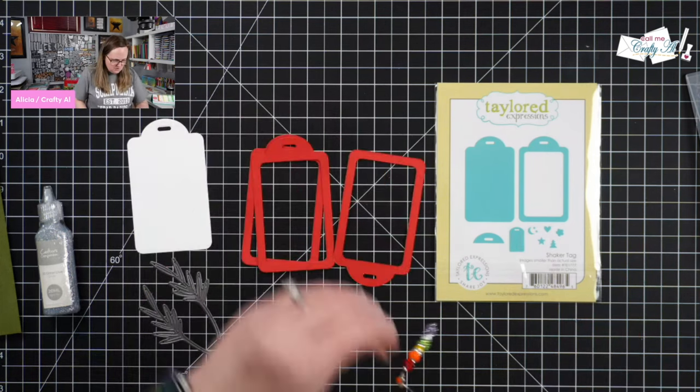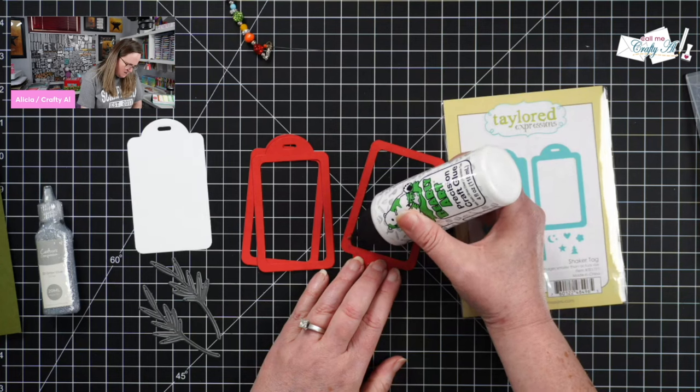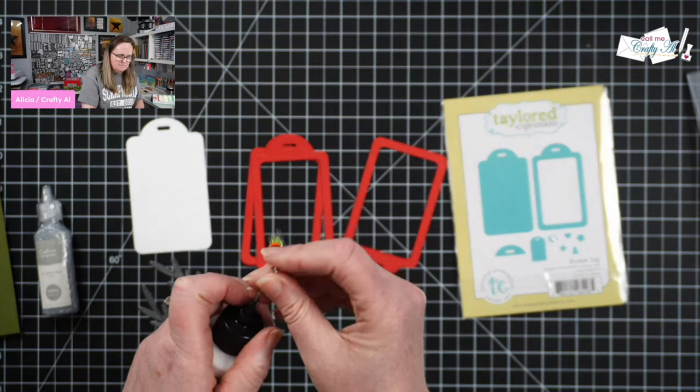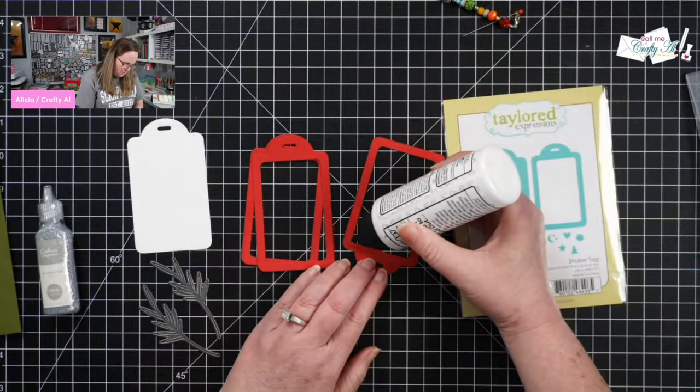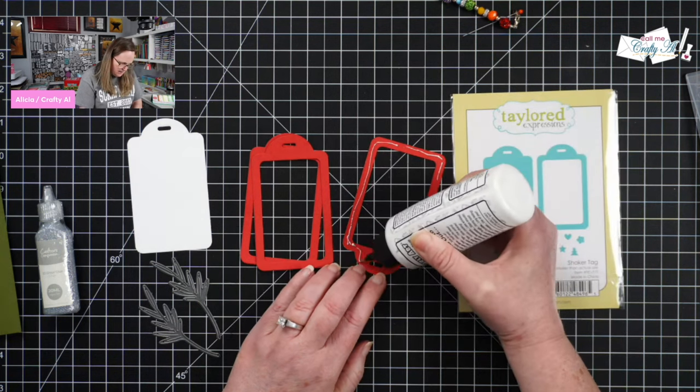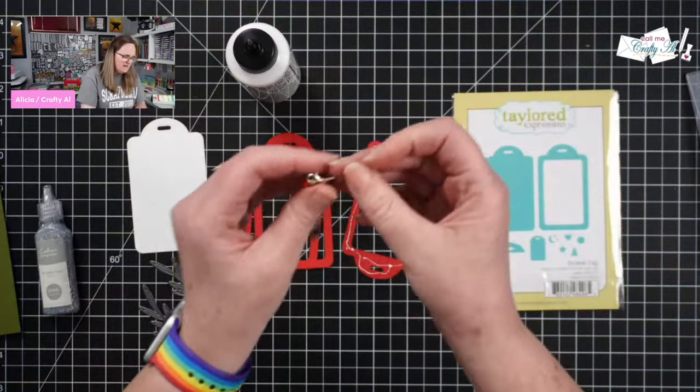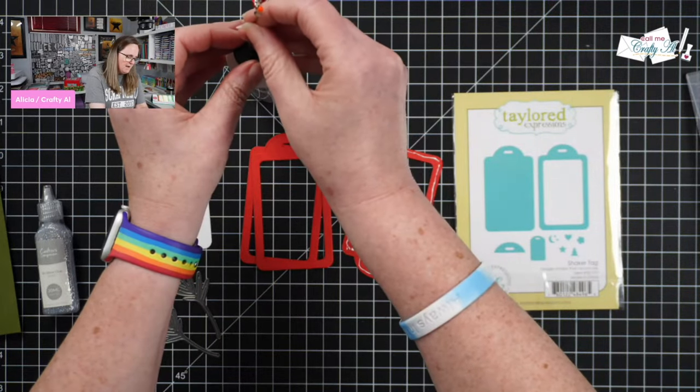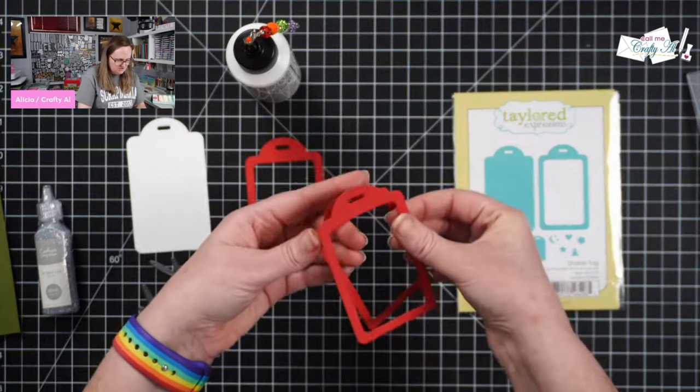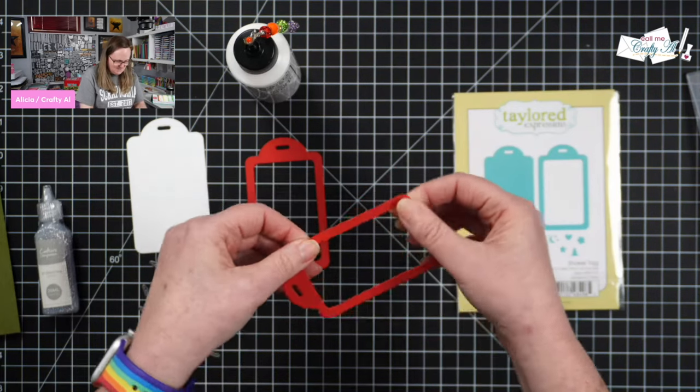Now, if you're wondering what those bonus words are all about, bonus secret word. So in each of my videos this month, I am giving at least one secret word. And remember the important part of that is secret. Do not give it away, but you'll collect those. And at the end of the month, I'm going to tell you how you can enter to win either a Spellbinders or a Crafter's Companion advent calendar.